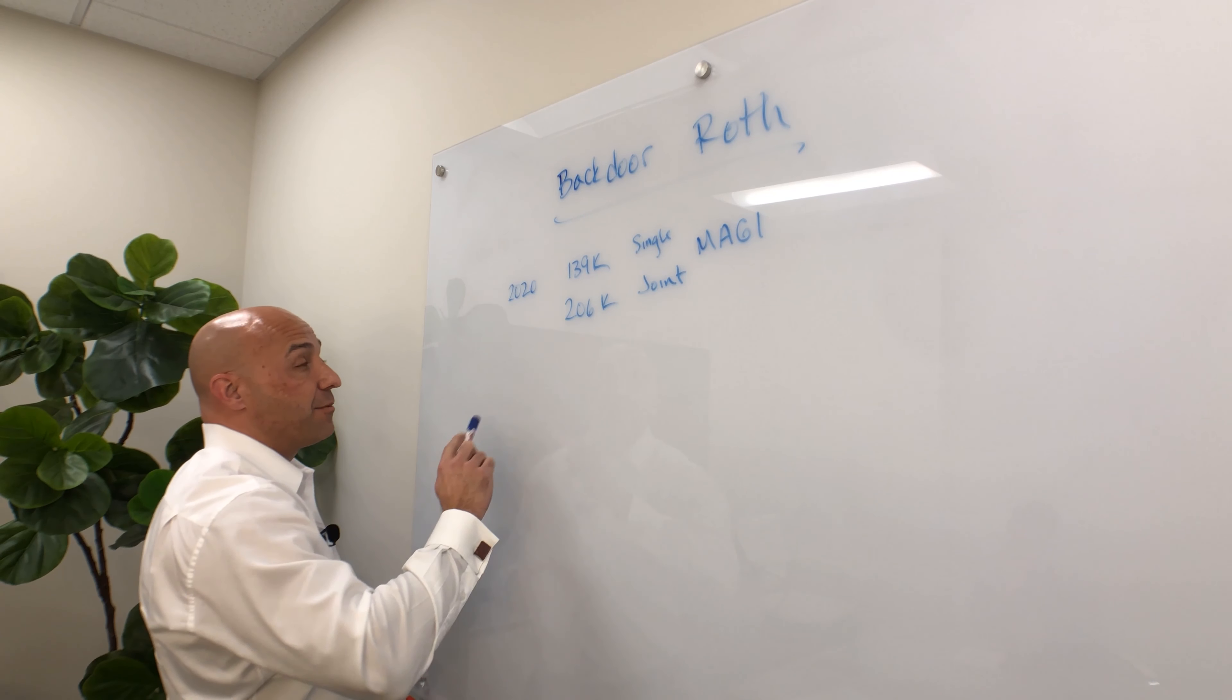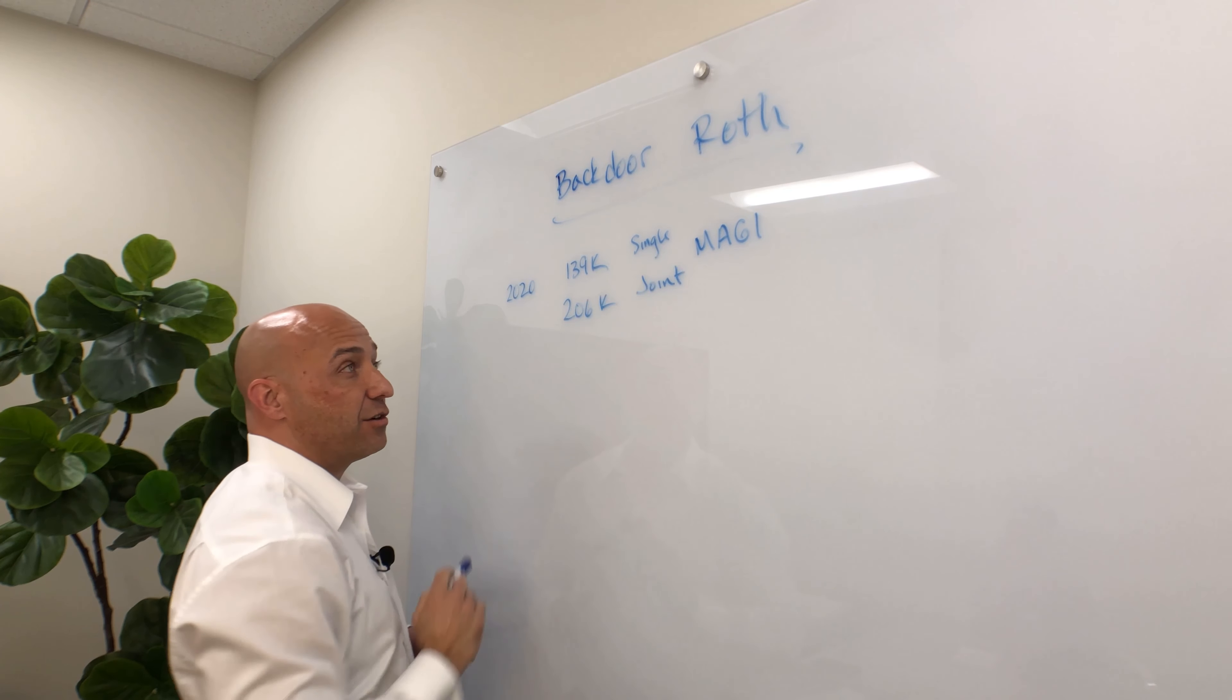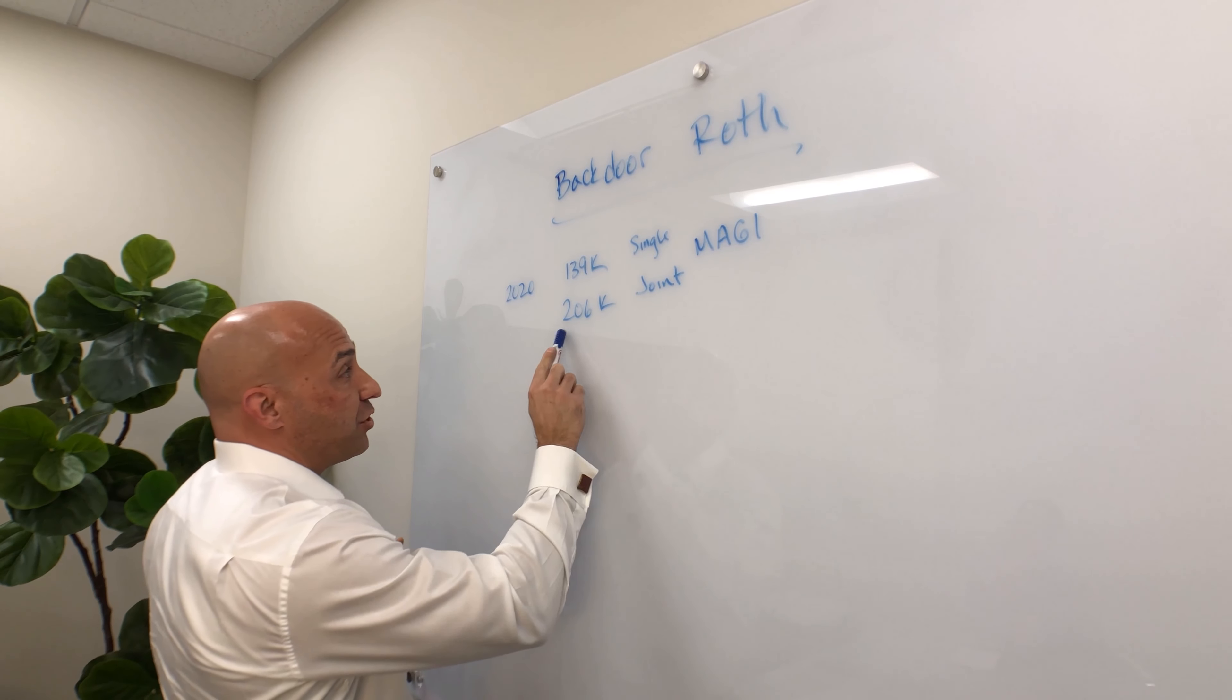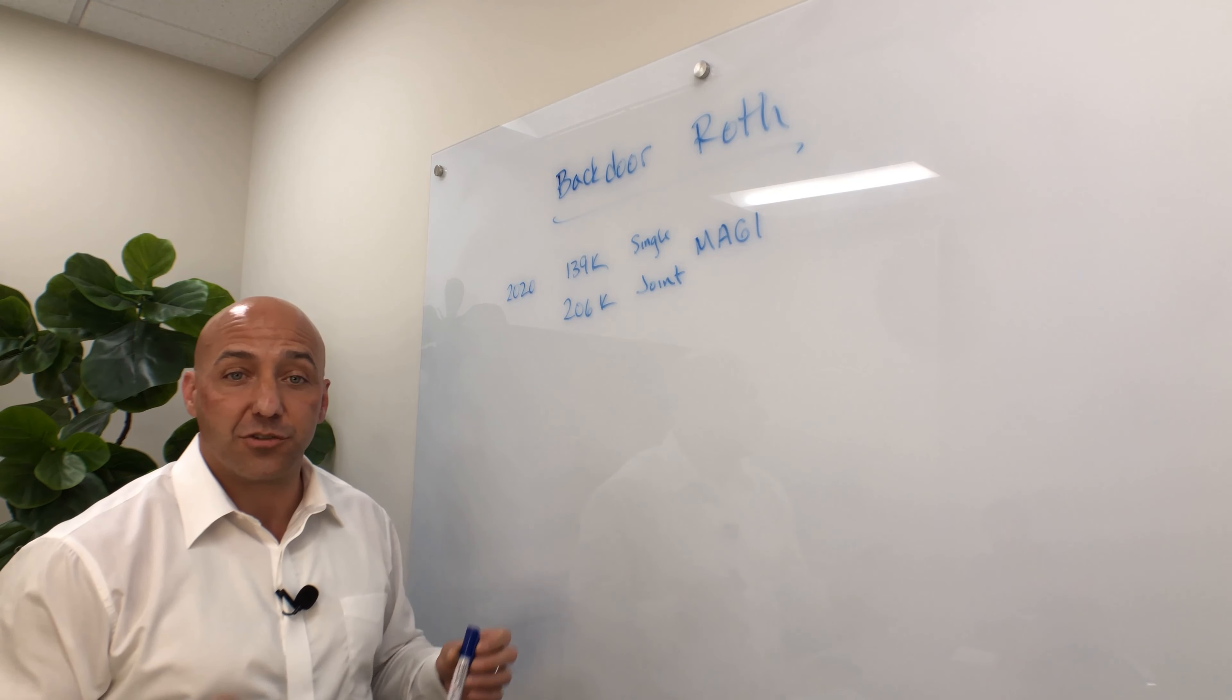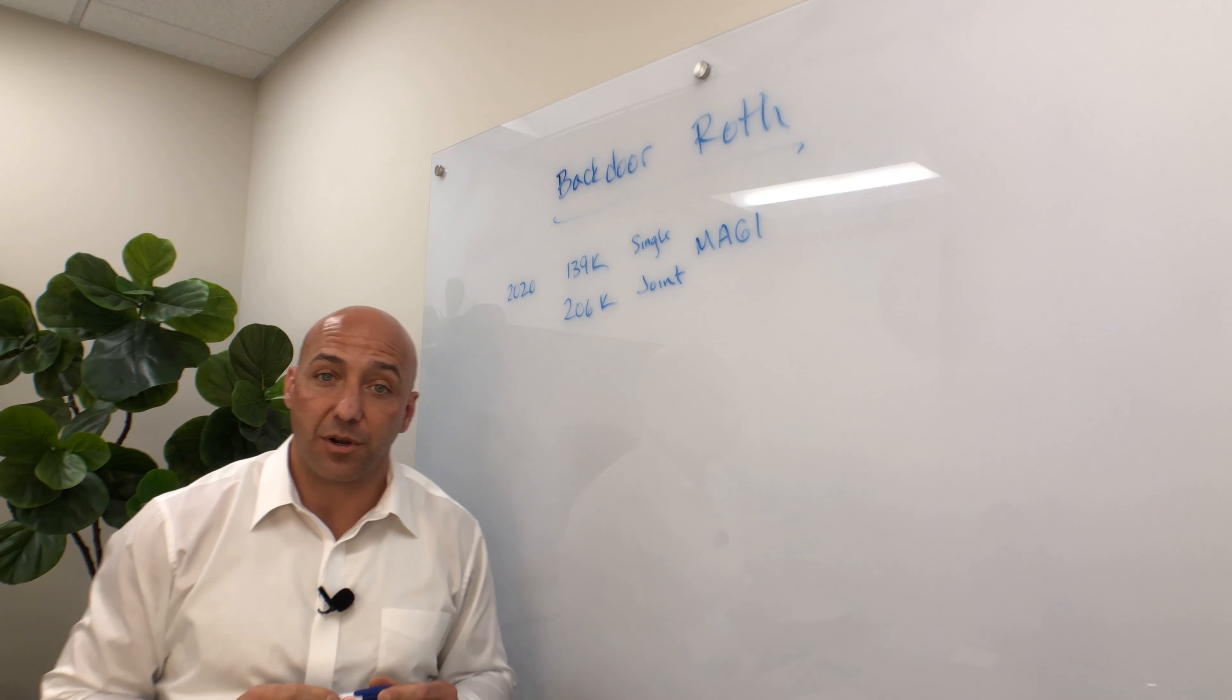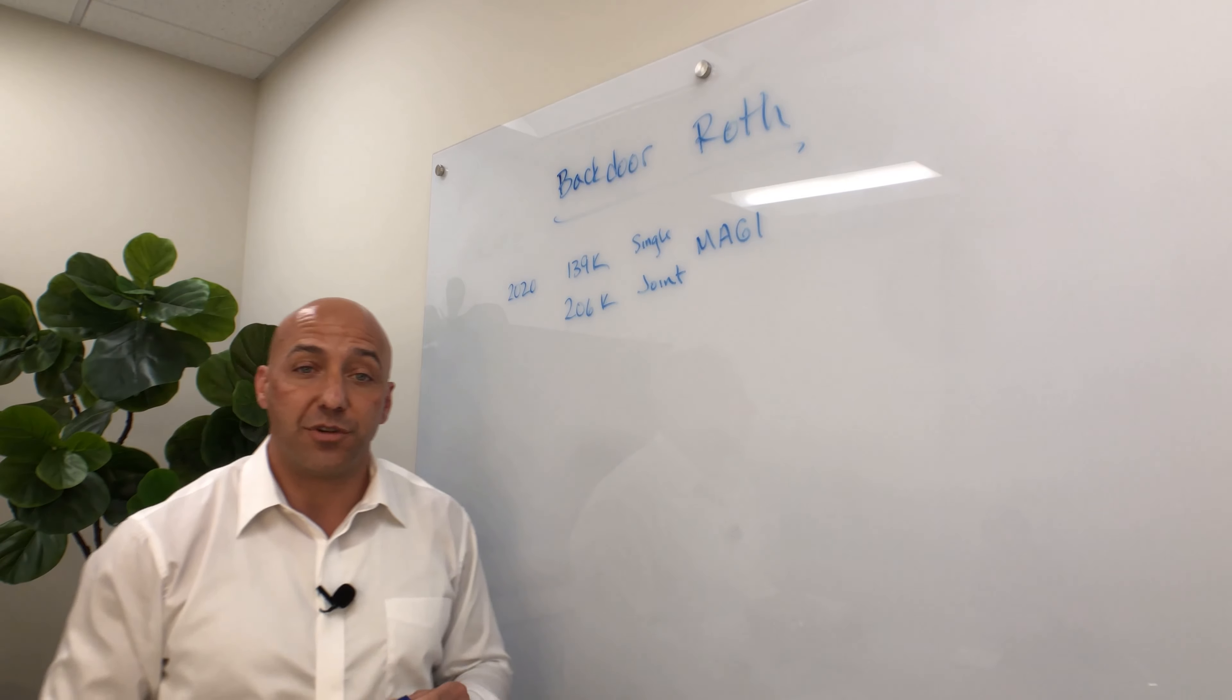In 2020, those limits are $139,000 for a single tax filer, $206,000 for joint, married filing joint, and that's your modified adjusted gross income number on your tax return. So if you make more than that, you're not allowed to contribute to a Roth IRA.